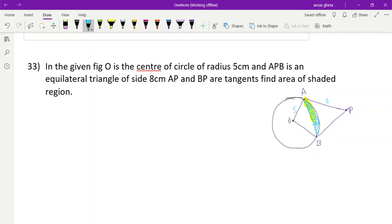Let us start the solution of this question. Given: O is the center of circle, radius is 5cm, and APB is an equilateral triangle of side 8cm. AP and BP are tangents. Since it is equilateral, AP equals BP equals AB, all are 8cm. Find the area of shaded region.